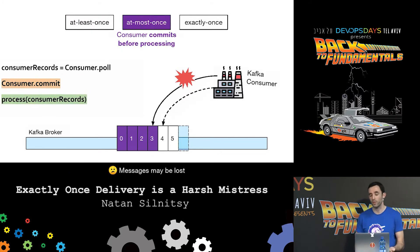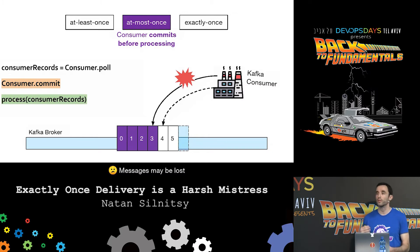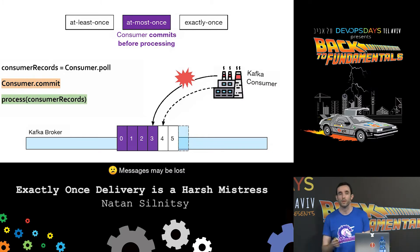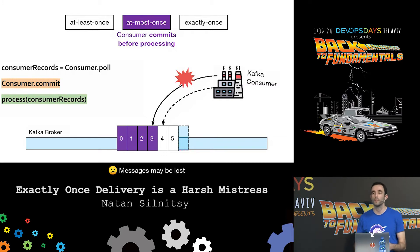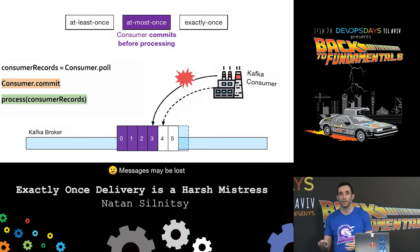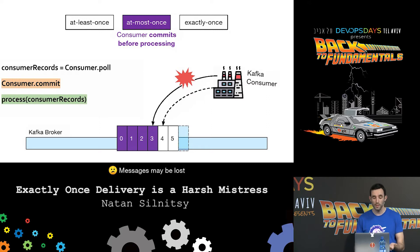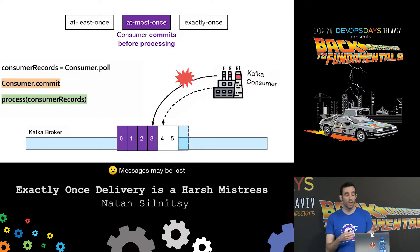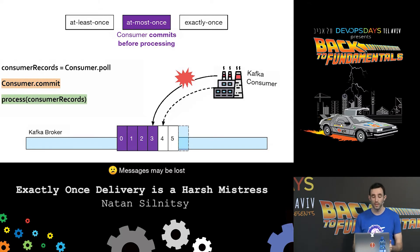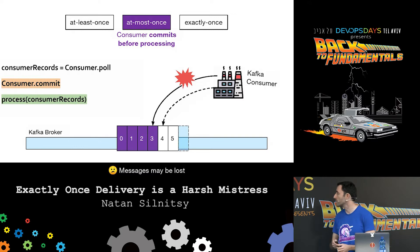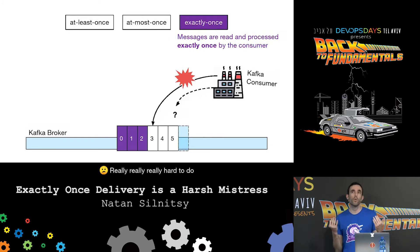We have three basic options for message delivery: at-least-once, at-most-once, and exactly-once. With at-least-once, the Kafka producer retries on every failure because we don't want to miss any message. If there's some problem with acknowledgement from the Kafka broker, we just retry and can end up with duplicate messages on the partition. On the consumer side, with at-least-once, we process the message before we commit it back to the partition, which can result in double or multiple processing on restart.